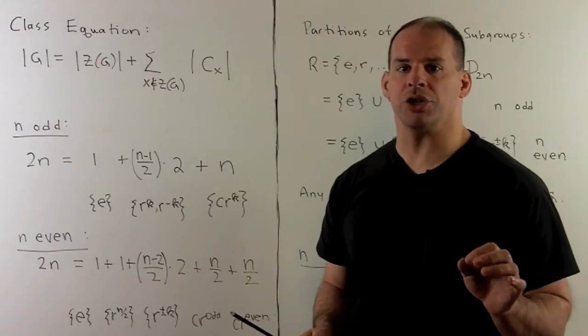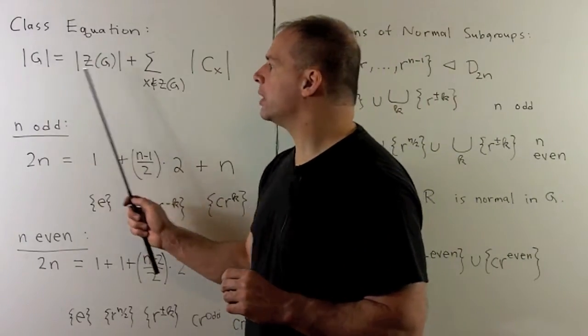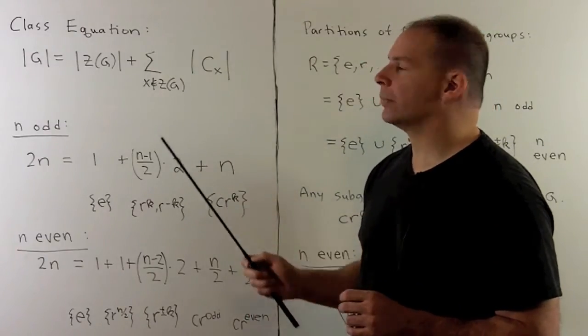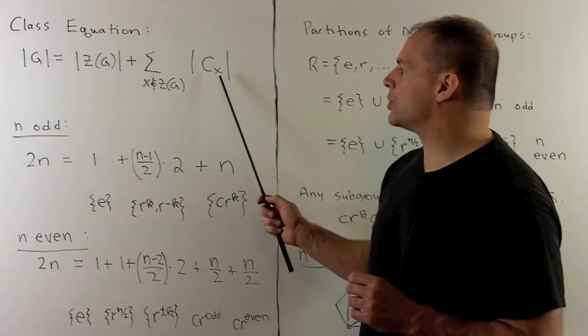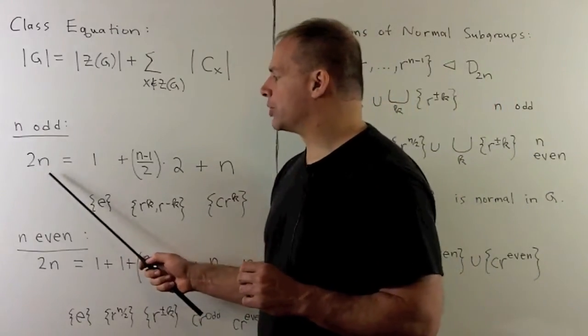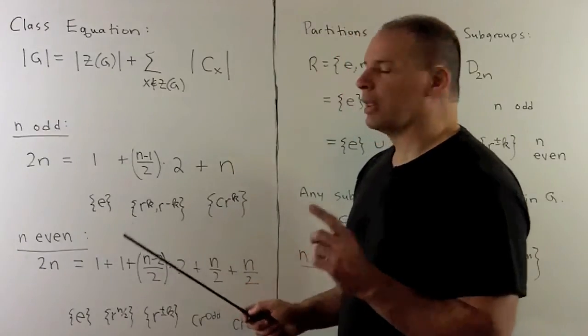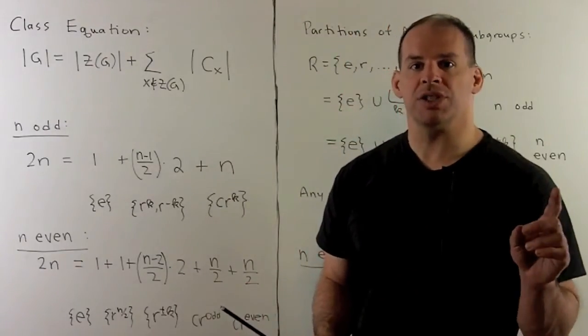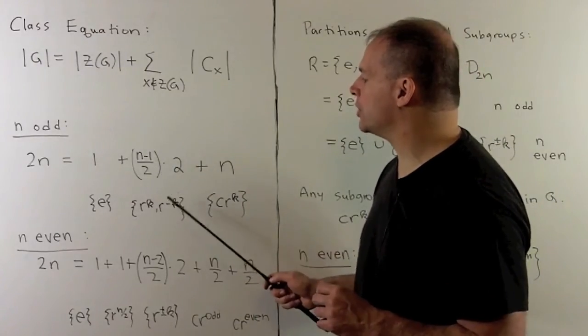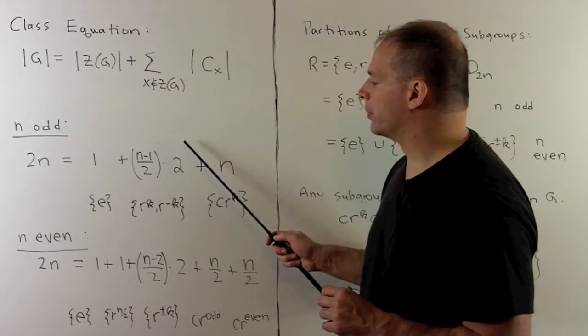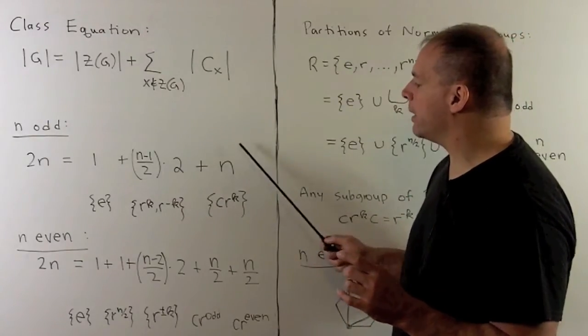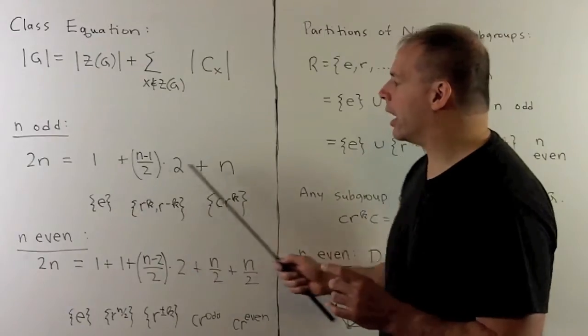Let's put everything together in the class equation. That says the order of the group equals the order of the center, plus the sum of the orders for elements not in the center. In the sum, we only use one representative for each class. When n is odd, order of the group is 2n, we get 1 from the identity element. That leaves n minus 1 rotations. They occur in pairs, so we have n minus 1 over 2 classes for rotations with 2 elements each. Then, for the reflections, they all fall into one class, so we have n of them. Add that up, and we get 2n.